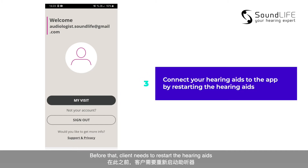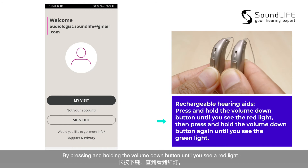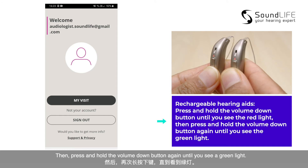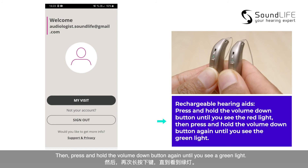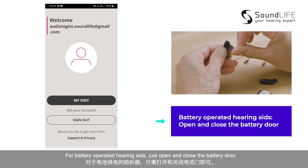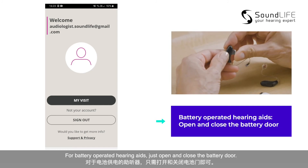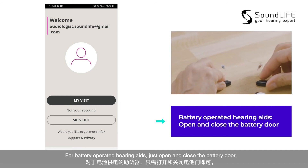Before that, the client needs to restart the hearing aids by pressing and holding the volume button until you see a red light, then press and hold the volume down button until you see a green light. For battery operated hearing aids, just open and close the battery door.